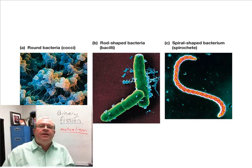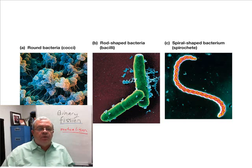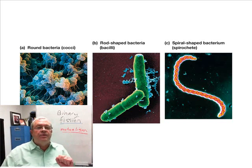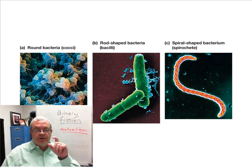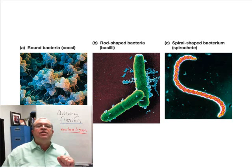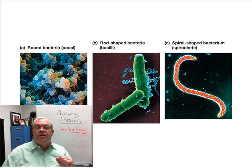We're going to have an extremely brief look at Kingdom Monera. We have bacteria which have three different basic shapes. There are some that are round — the term is cocci, singular coccus, plural cocci — round bacteria. Rod-shaped bacteria: singular bacillus, plural bacilli. And then spiral-shaped bacteria called spirochetes.